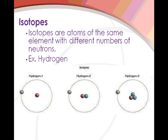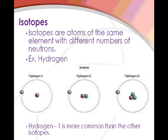Each one of these isotopes has a natural abundance. In the universe, 99.9% of our hydrogen is the hydrogen 1 isotope. Hydrogen 2 has an abundance of 0.01% — one hundredth of a percent. Hydrogen 3 is found so little we can't even detect it. Since hydrogen 1 is 99.9% abundant, it is our most common isotope, and so the mass of hydrogen on our periodic table is closer to 1 than 2 or 3.